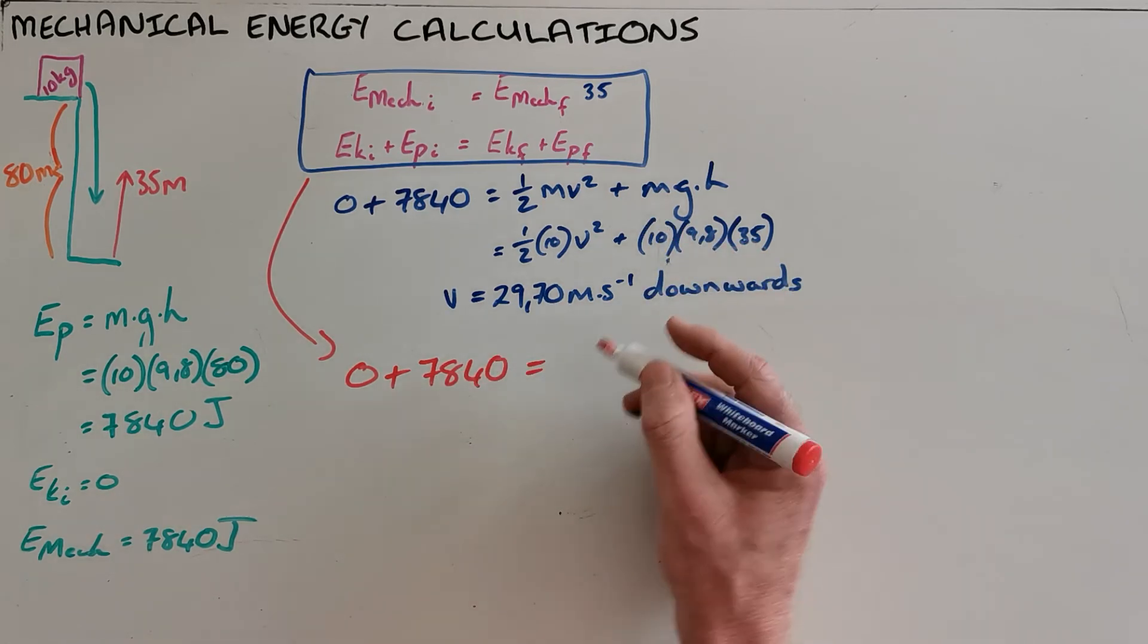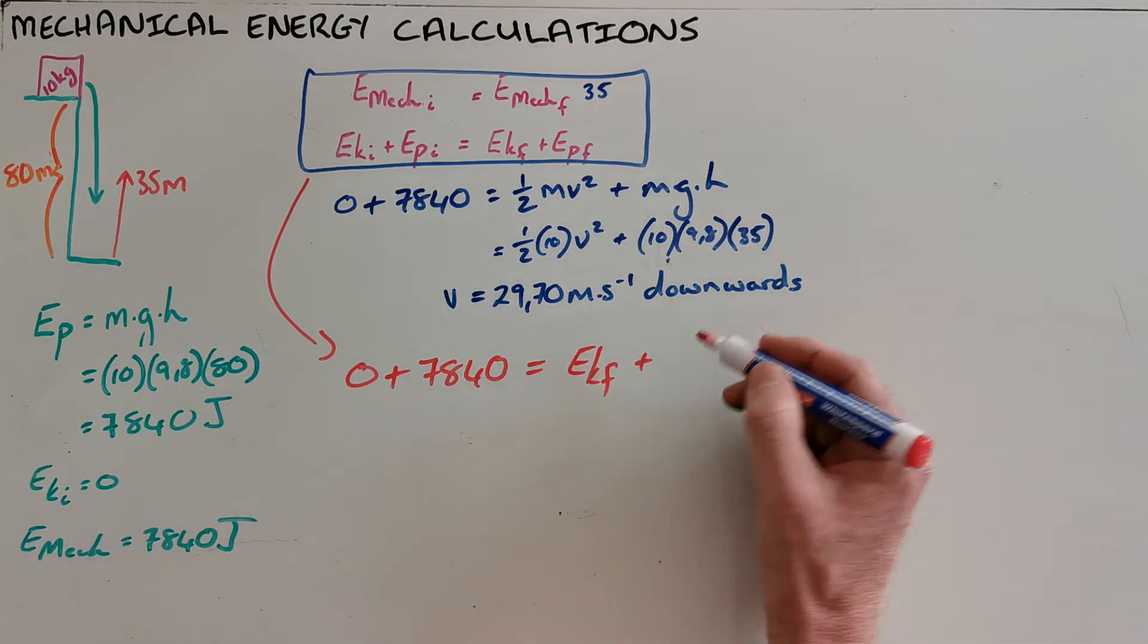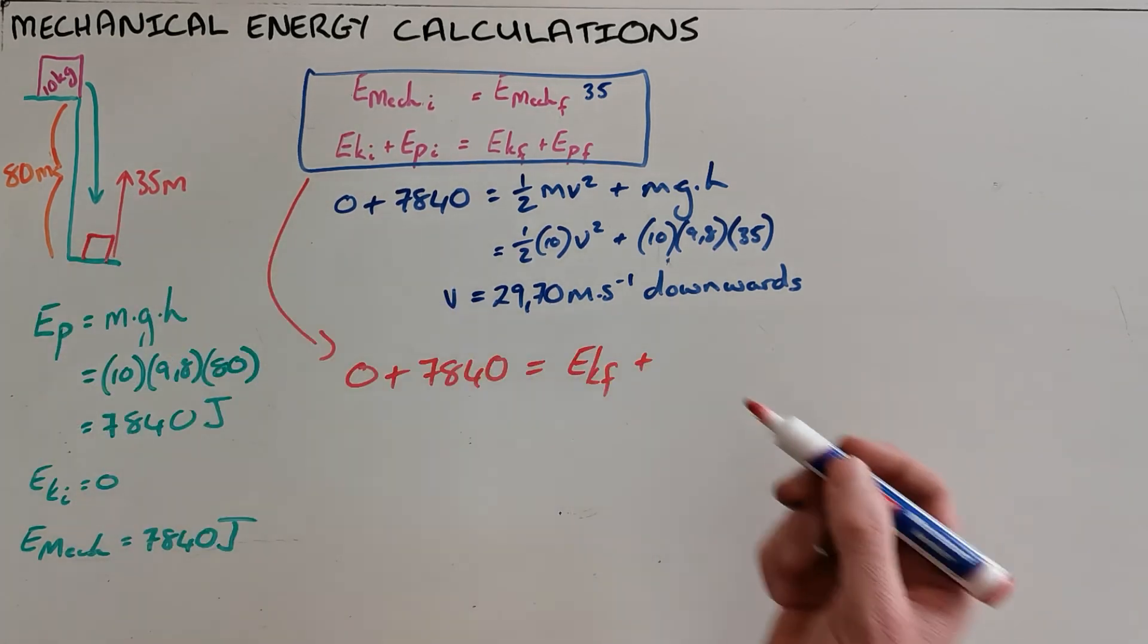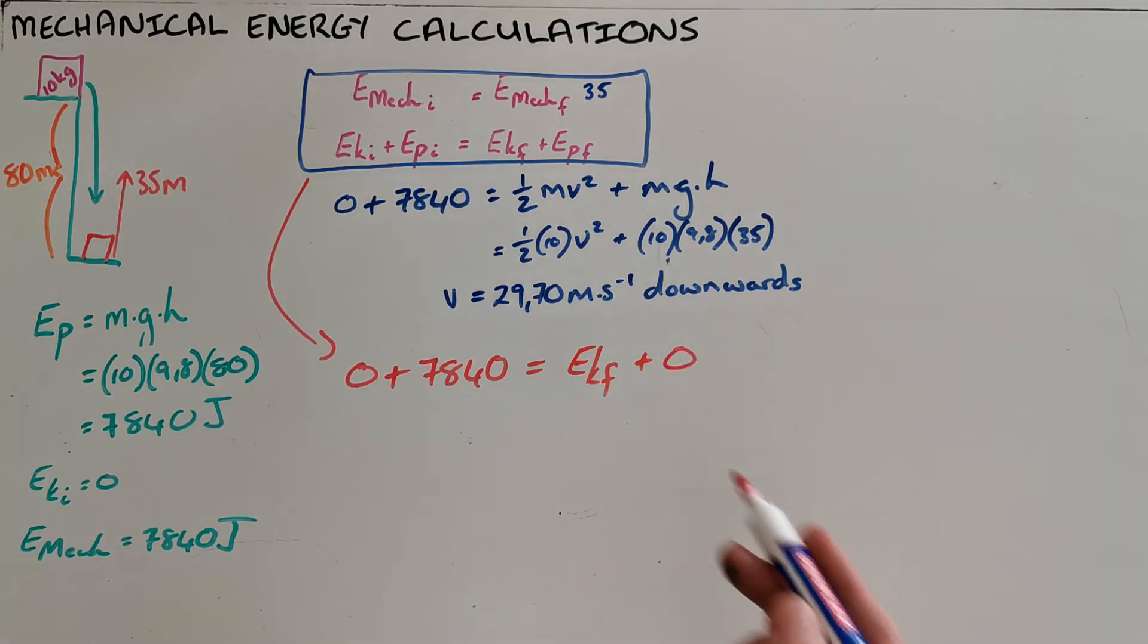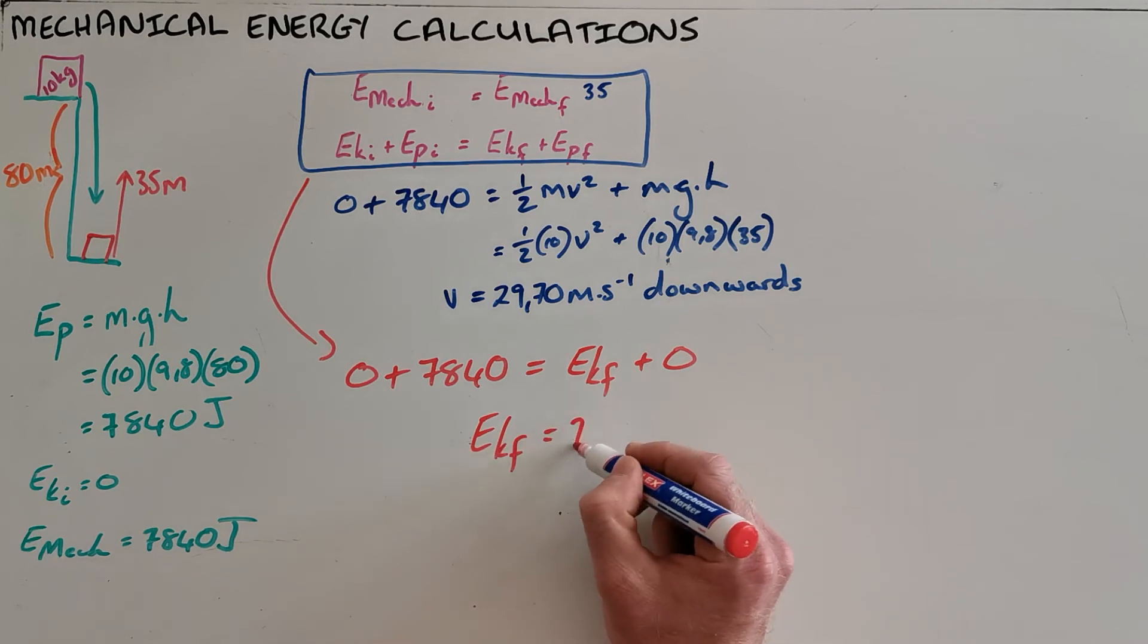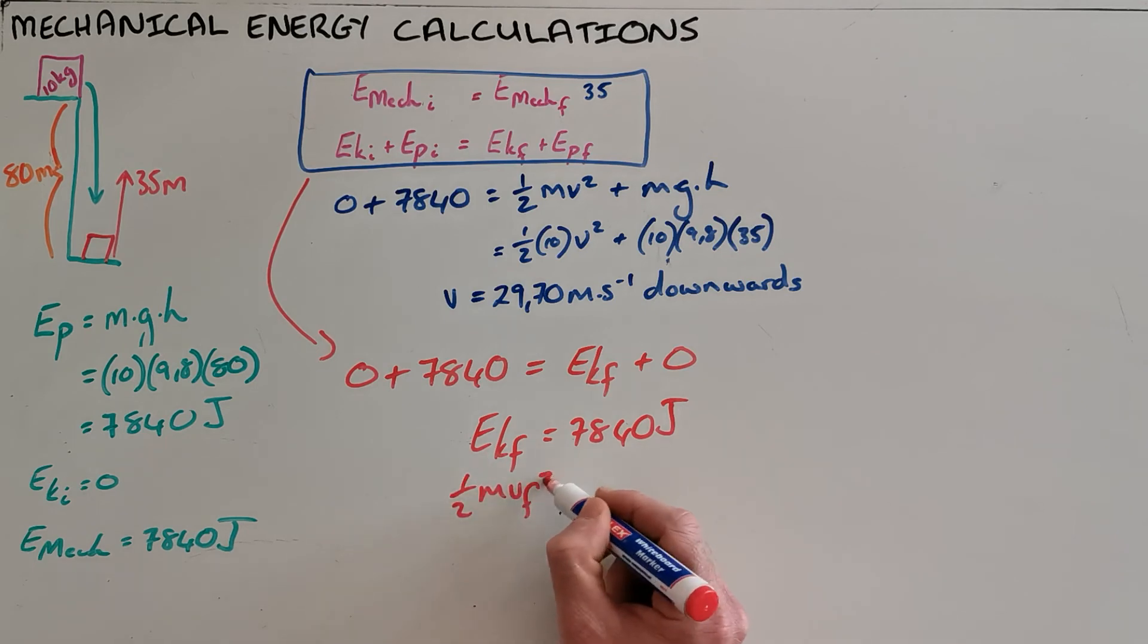Now because the mechanical energy at the end is made up of a kinetic energy and a potential energy, but the potential energy is zero because the object is now at the ground and cannot fall any further, we say that the final potential energy is zero which allows us to find the final kinetic energy as 7840 joules.